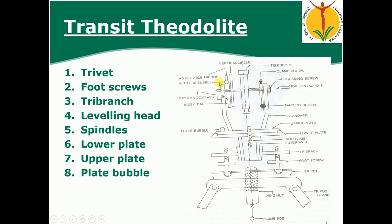Next we are going to see what is meant by a transit theodolite. Transit means when the telescope rotates about the horizontal axis in a vertical plane by 180 degrees — that instrument is called a transit theodolite. Now we are going to see the various parts using a typical cross-section of the theodolite.